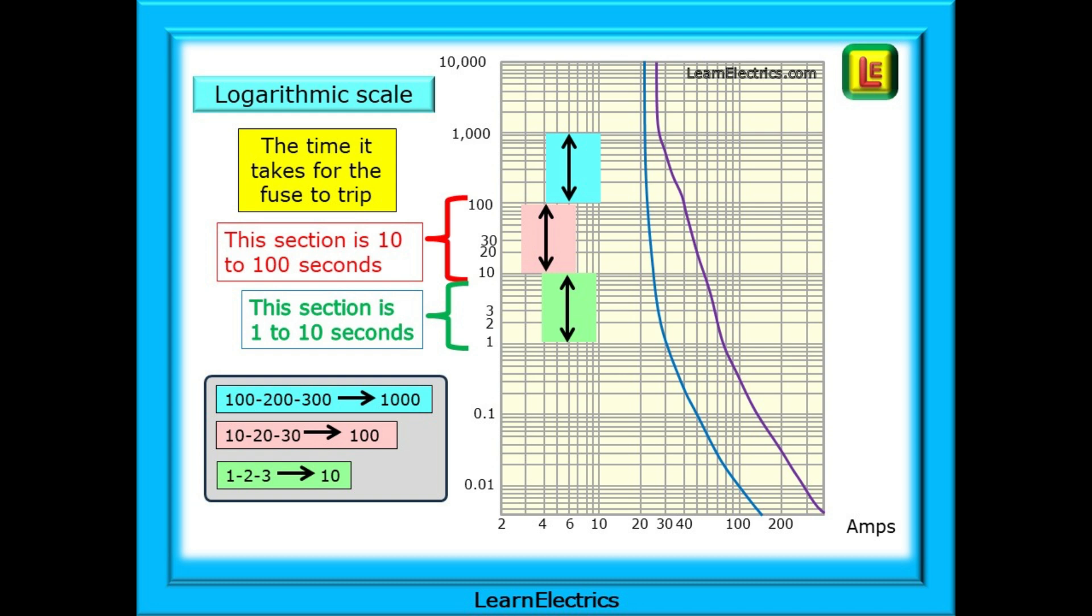Now the pink section. Exactly the same size on the graph, but this covers from 10 seconds to 100 seconds, 10 times the span of the green box. It's marked in jumps of 10 seconds, 20 seconds, 30, 40, and so on. Moving to the blue box, this is from 100 seconds to 1,000 seconds. So, 100, 200, 300, 400, and so on.